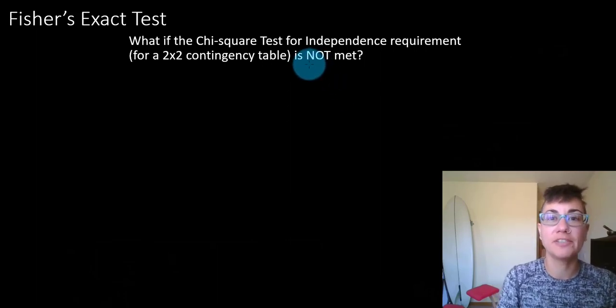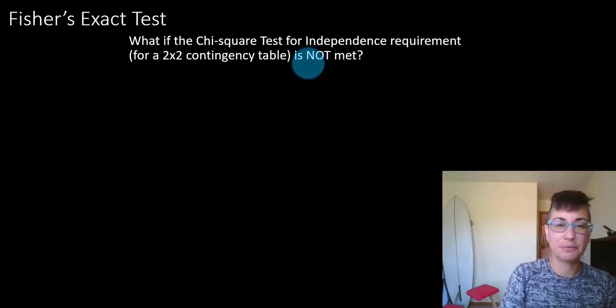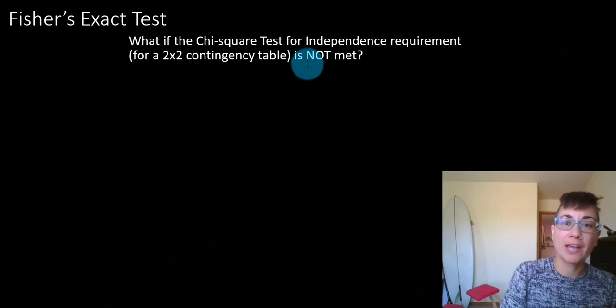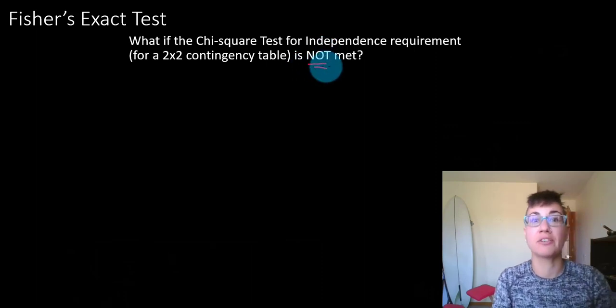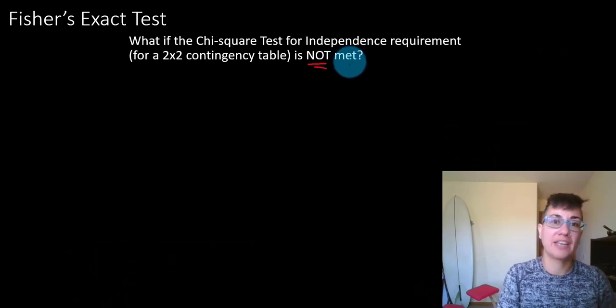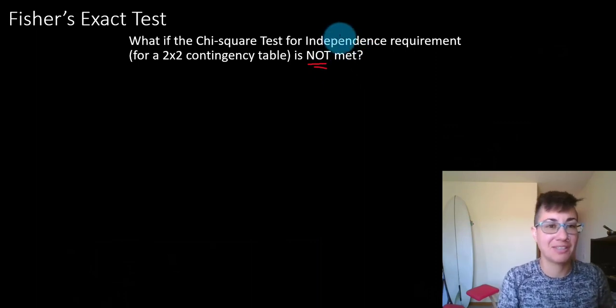Hey everyone, in the previous video I cliffhangered you with the question of what happens when the test requirements are not met for a chi-square test of independence. Well, that's going to be the topic for today.